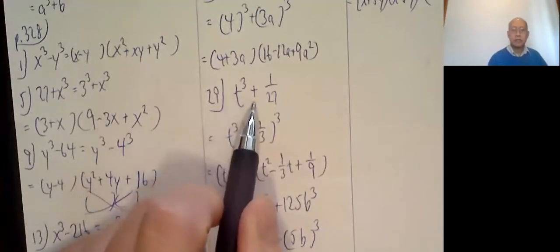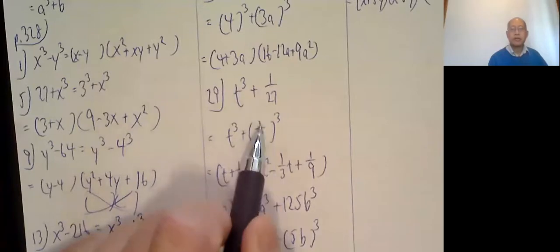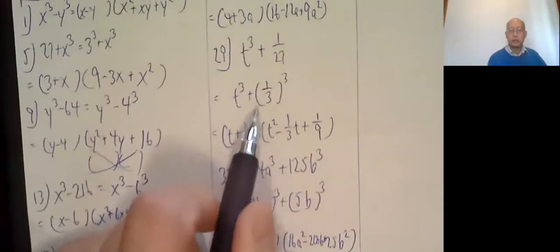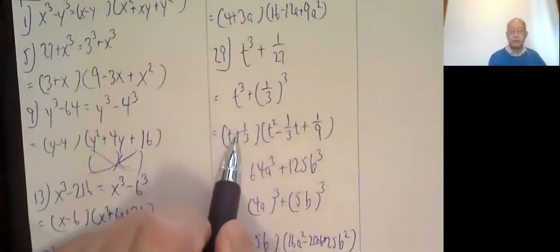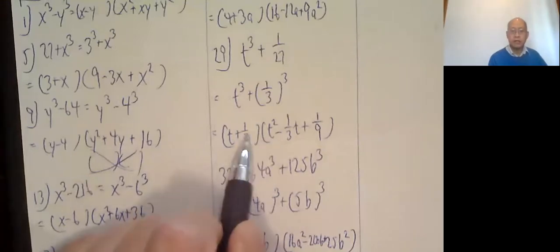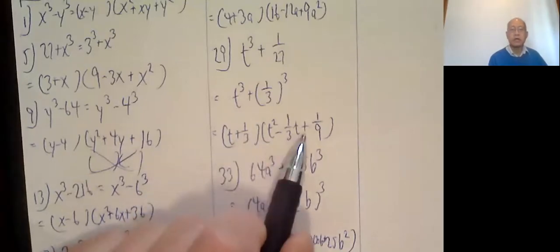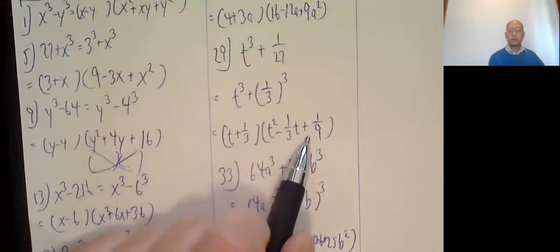29. t cubed plus 1 third cubed. This is 1 third cubed. We're using the formula. t plus 1 third. t squared minus the product of these, 1 third t plus 1 third squared, which is 1 ninth.